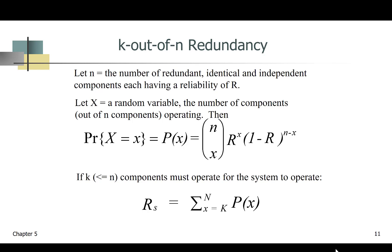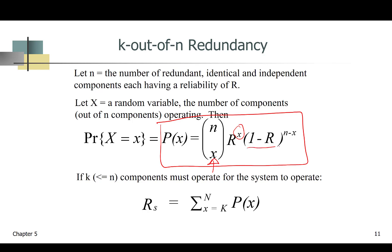We consider k-out-of-n redundancies. Let n be the number of redundant, identical, and independent components, each having a reliability of r. And x is a random variable representing the number of components out of n that are operating. The probability of an exact value of x, or number of components functioning, is given by the binomial probability function, where the first term is combinations of n given x, the second term is reliability raised to the power of x, and the third term is the probability of failure, or 1 minus reliability, raised to the power of n minus x.